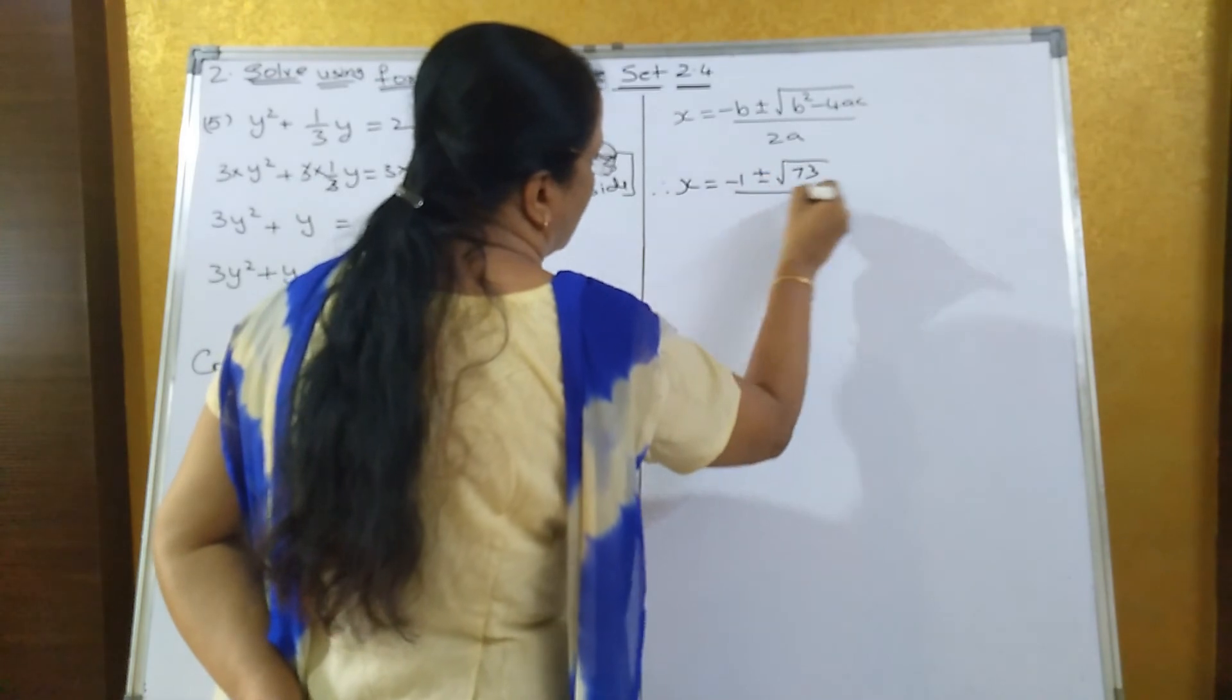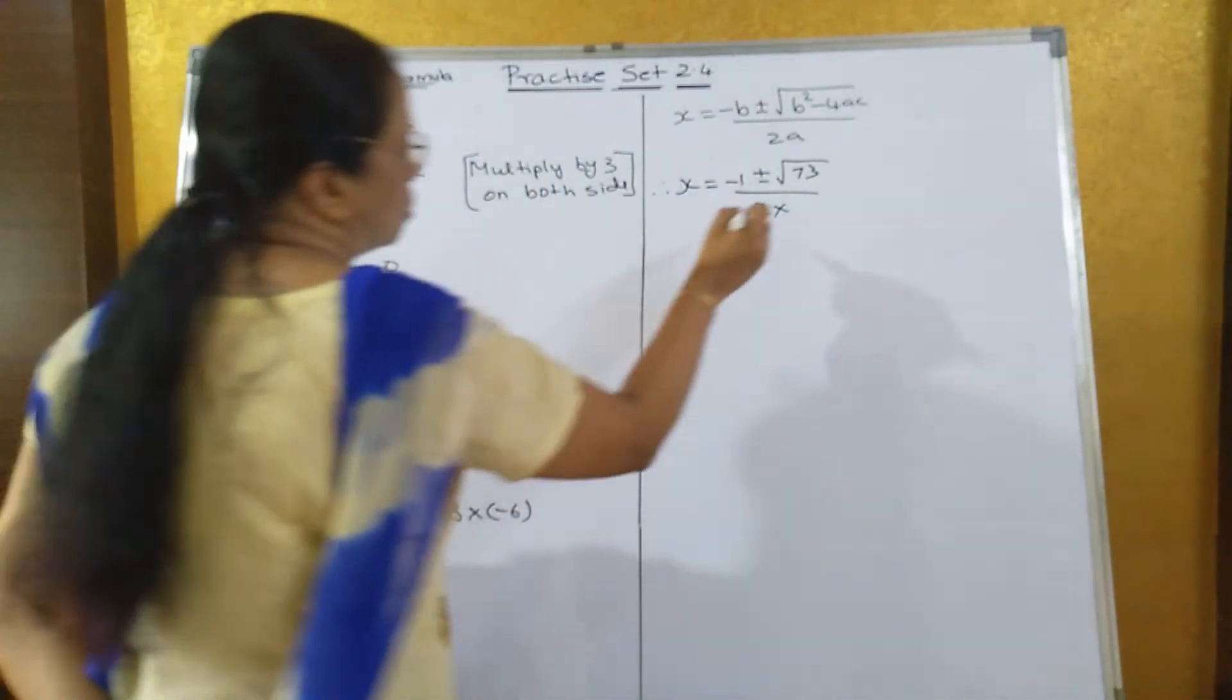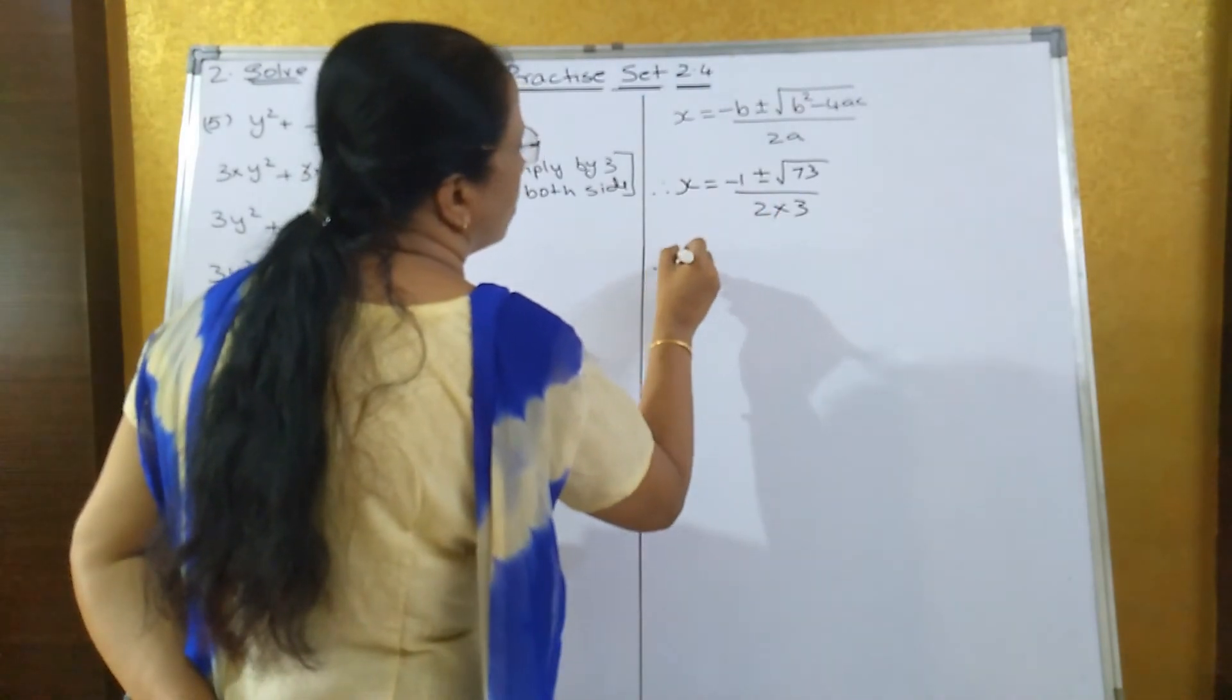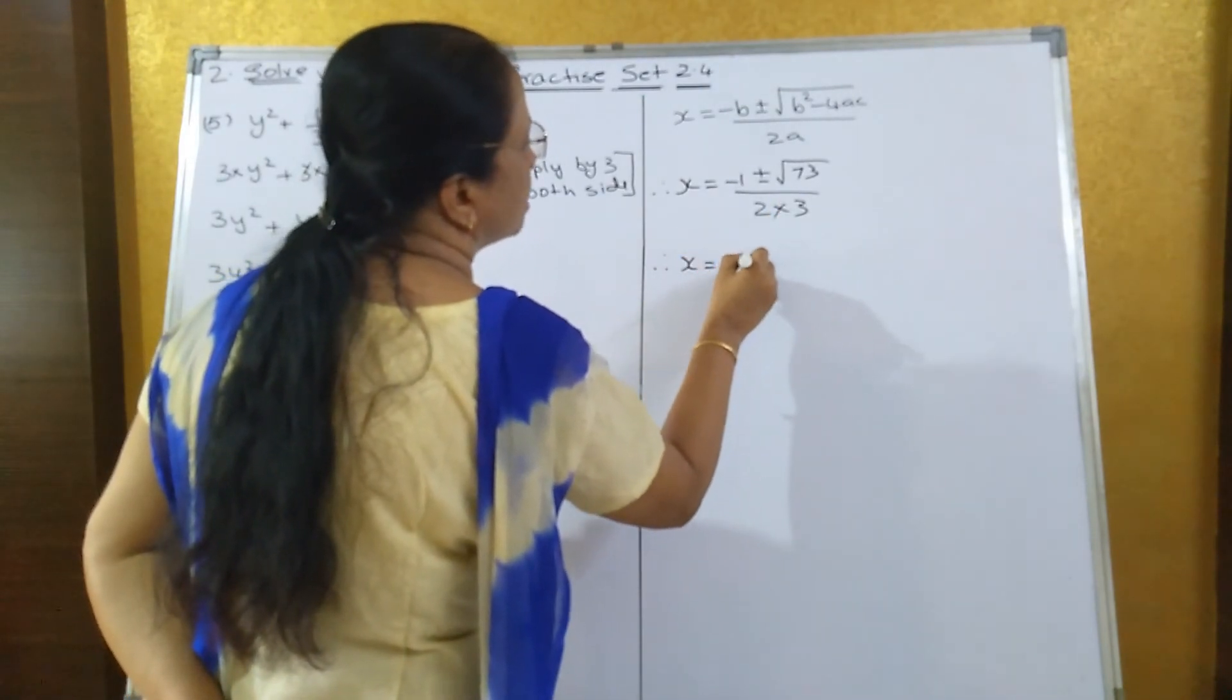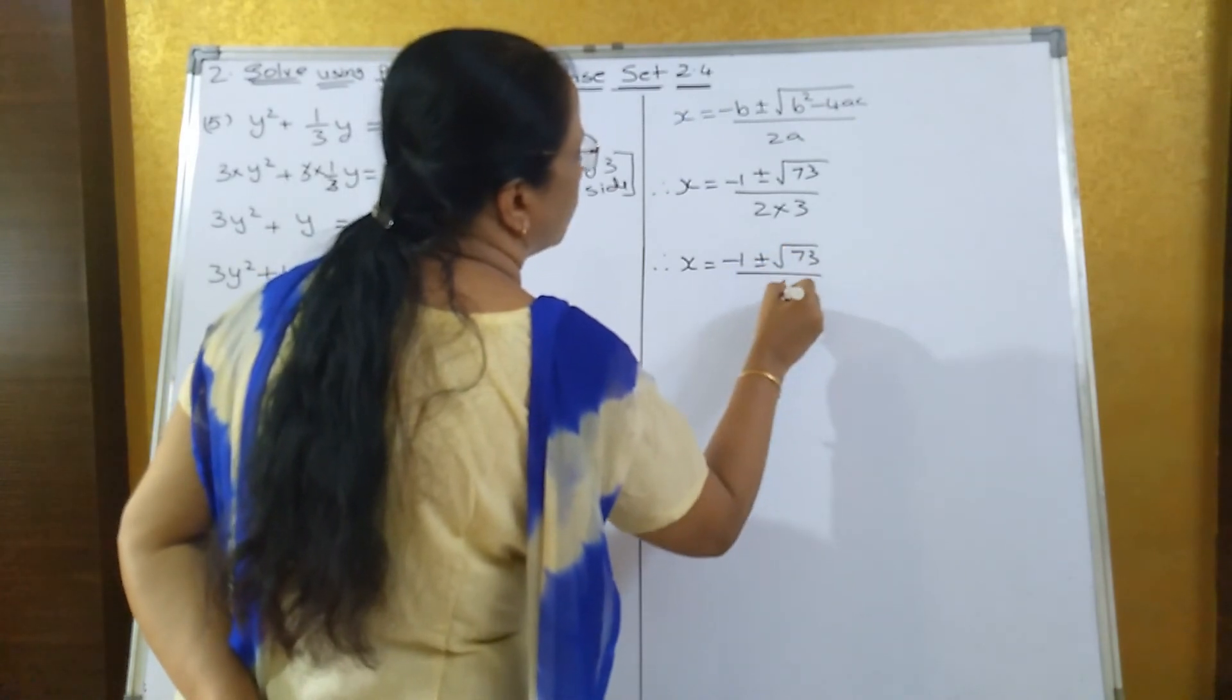√73 upon 2 × a is 3, so 2 × 3. Therefore, x = (-1 ± √73)/6.